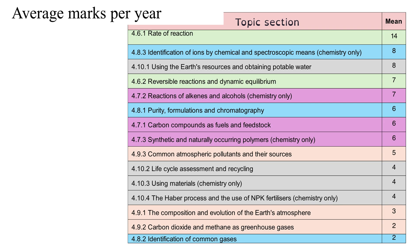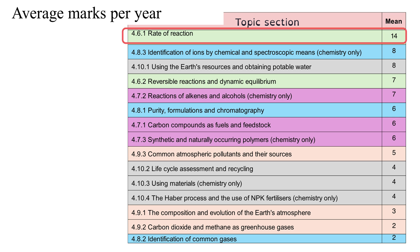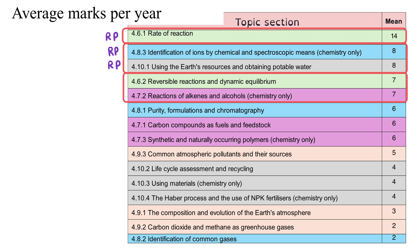Each of those five topics divides naturally into subsections — 15 in total. Looking at the average marks available for each, the rate of reaction section stands out, worth on average 14 marks each year. This section involves a required practical that is tested quite frequently. In joint second is identification of ions and Earth's resources (specifically obtaining potable water), worth on average eight marks each. Rounding out the top five are reversible reactions and dynamic equilibrium and reactions of alkenes and alcohols, worth on average seven marks each.